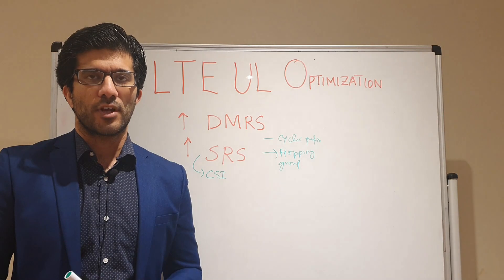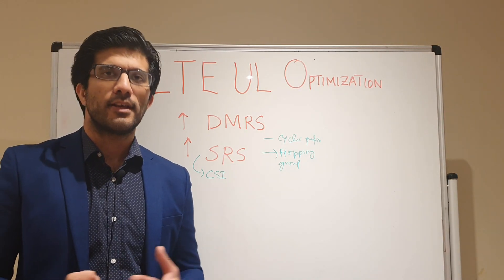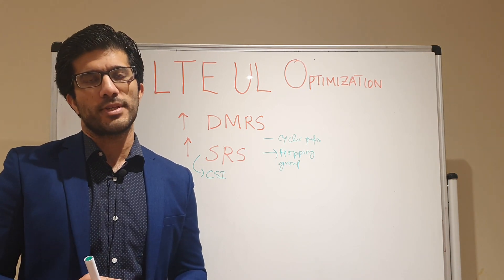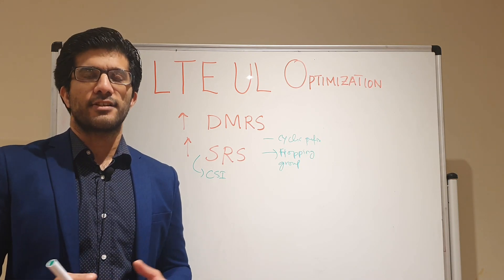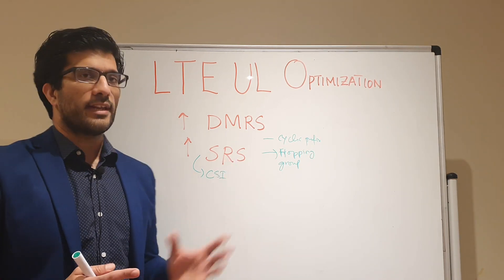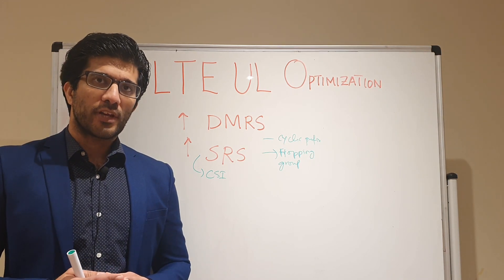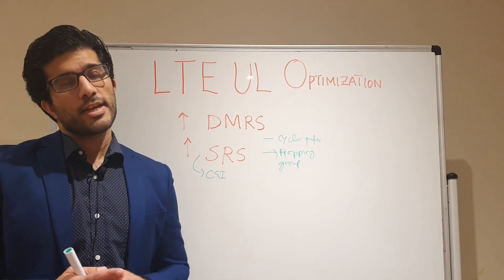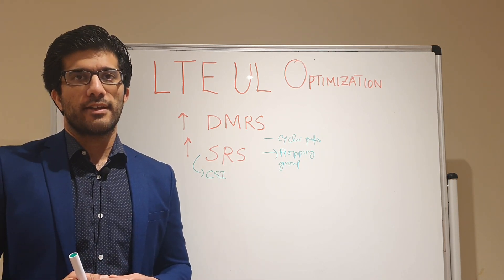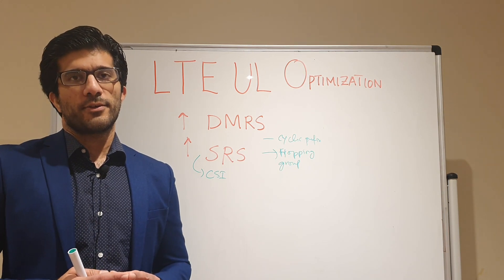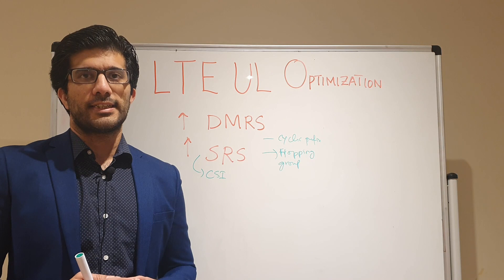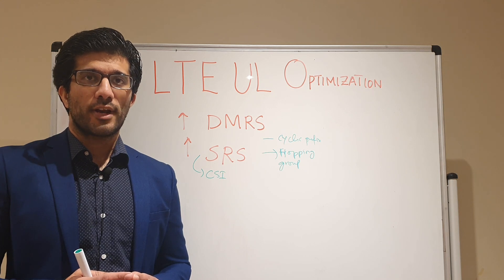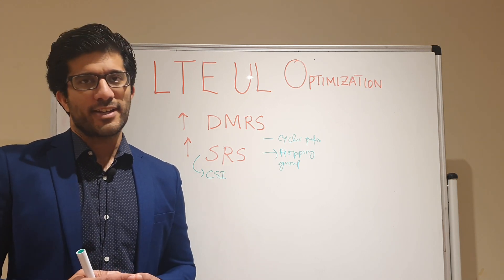The same group hopping is used for SRS as well. To improve SRS performance, group hopping and cyclic shift are used in a similar way as in DMRS. These are the two reference signals used in the uplink. Improving their performance and reducing intercell interference can improve throughput in the uplink. We will continue with more lectures on uplink optimization — see you in the next video.